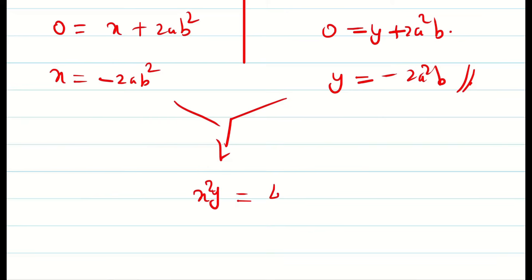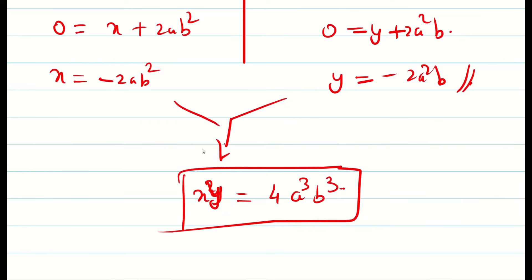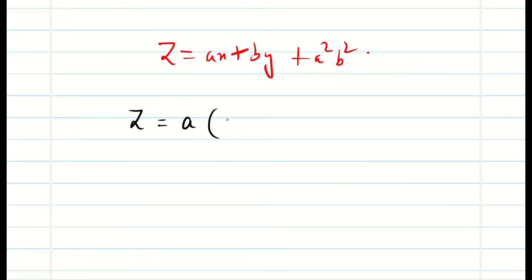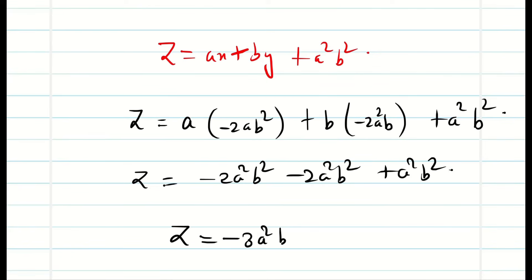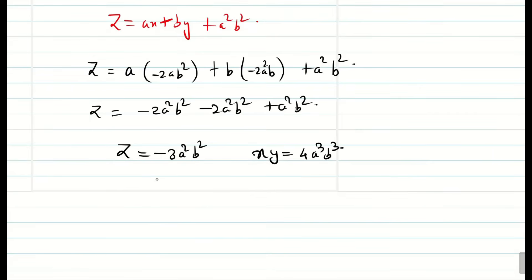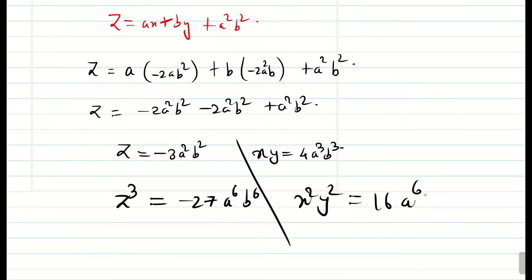Since we cannot directly eliminate a and b, we substitute x and y into the complete solution: z equal to ax plus by plus a square b square. Substituting gives z equal to a times minus 2ab square plus b times minus 2a square b plus a square b square, which simplifies to minus 2a square b square minus 2a square b square plus a square b square, giving z equal to minus 3a square b square. Cubing both sides of z: minus z cube equals 27 a power 6 b power 6. Squaring xy equals 4a cube b cube gives x square y square equal to 16 a power 6 b power 6. Equating gives 16z cube equal to minus 27 x square y square as the singular solution.